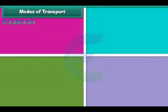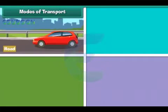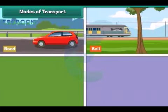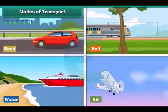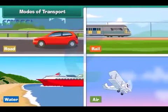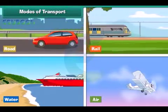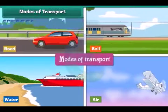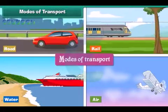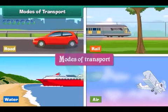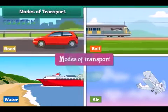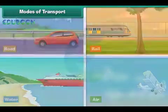Goods, animals and people can be transported by road, rail, water or air. Different mediums used for transportation are known as the modes of transport. Modes of transport can be broadly divided into three categories.